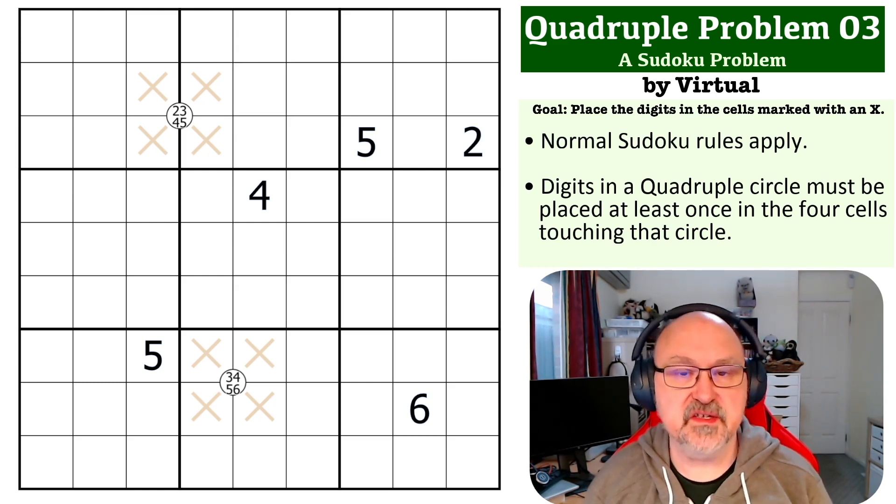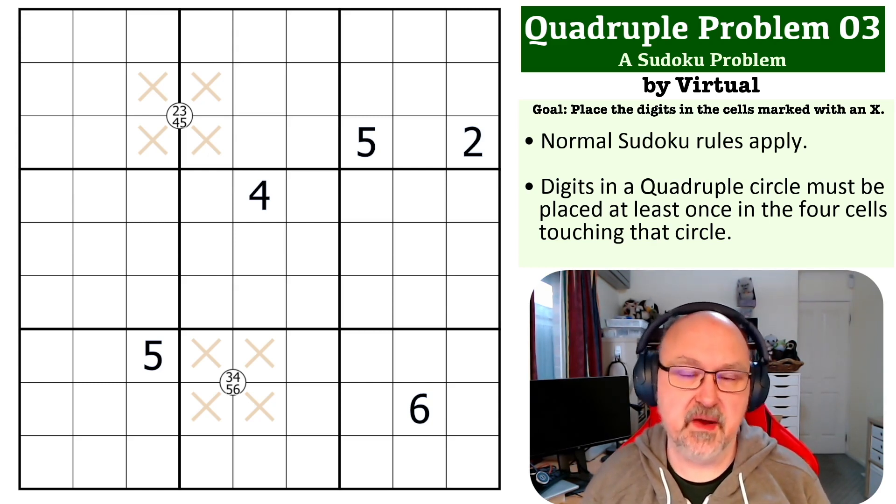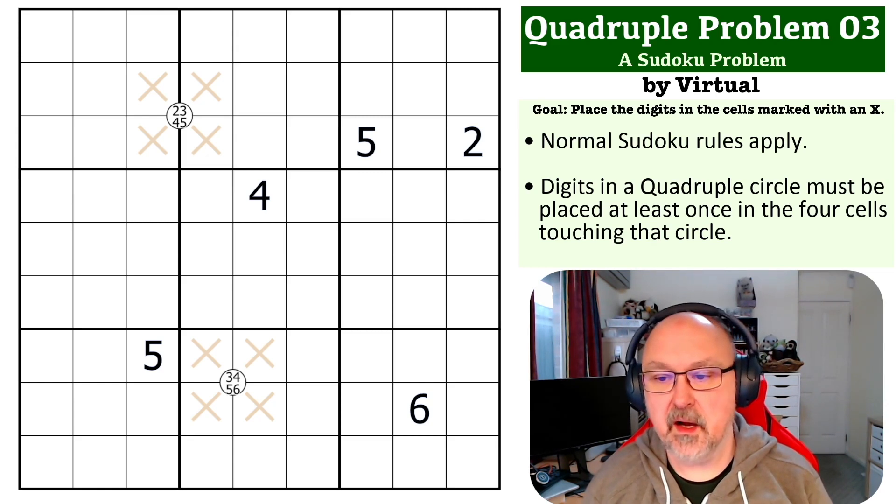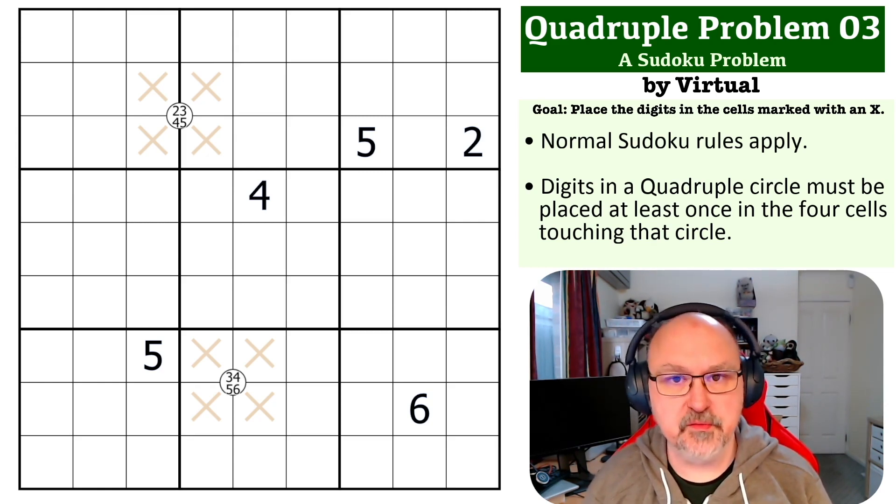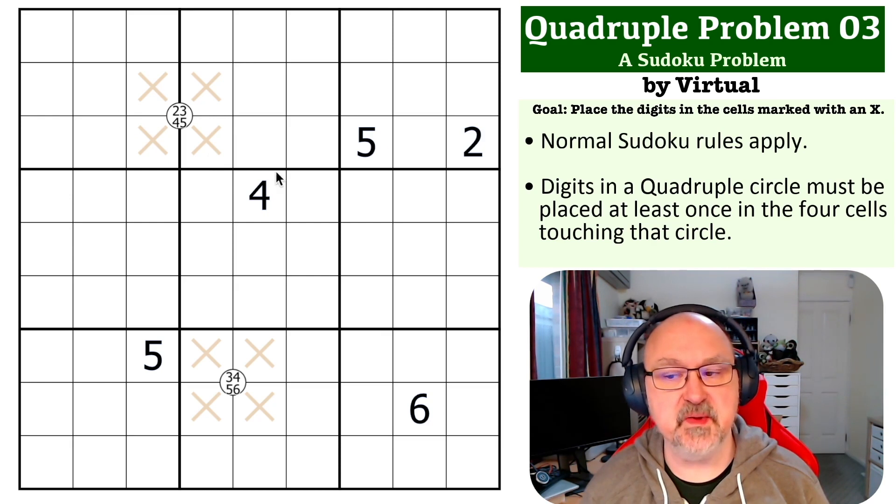So the goal of this is to place the digits in the cells marked with an X. Normal Sudoku rules apply as always, and the way that quadruple clues work is the digits that appear in circles must be placed at least once in the four cells touching that circle.